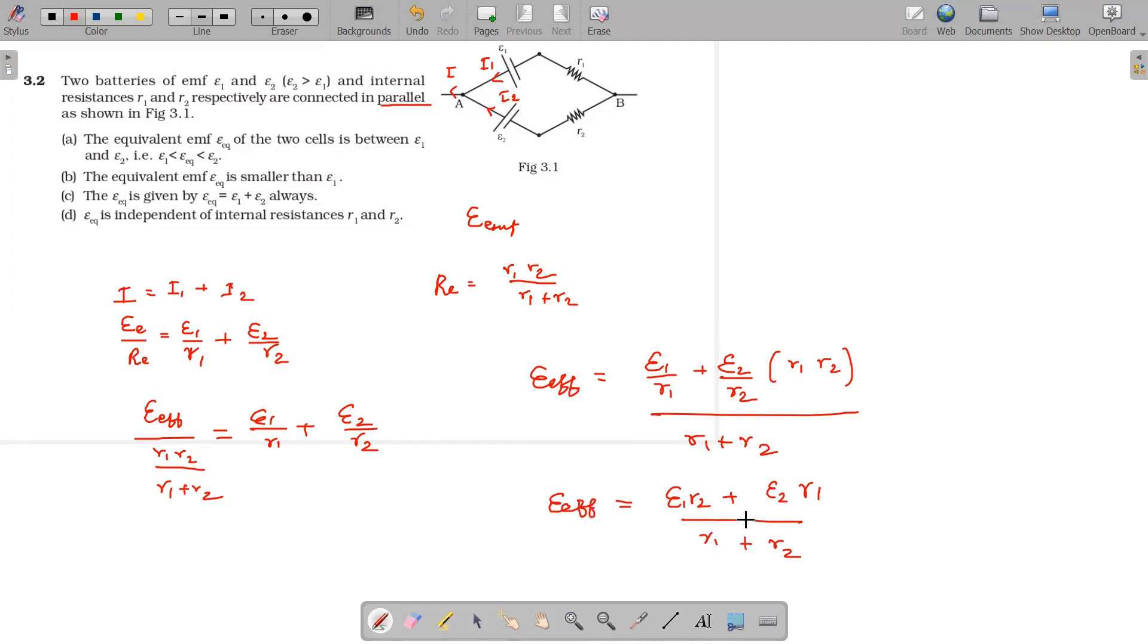If you calculate the effective EMF or combined EMF, that will be definitely in between these two values e1 and e2. Conclusion: e_effective, it is given e2 is greater, is less than e2 but greater than e1. That will be the answer for this.